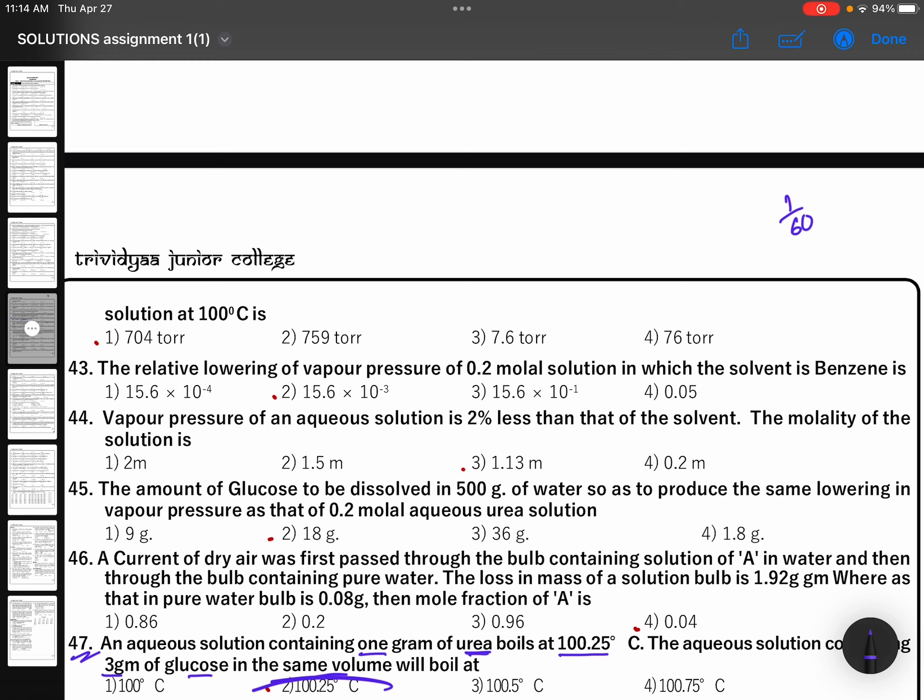And he is asking for glucose, 3 grams of glucose, 3 by 180. Rest things are same, so this is again 1 by 60. This is also 1 by 60.